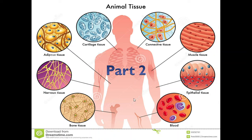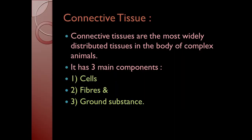Welcome to class. In the previous video we studied about the epithelial tissue. Now let us discuss about the second part of animal tissues. Connective tissues are the most widely distributed tissues in the body of complex animals. Due to their special functioning of linking and supporting the various parts of the body, they have been named as connective tissue.